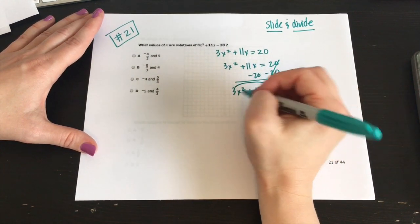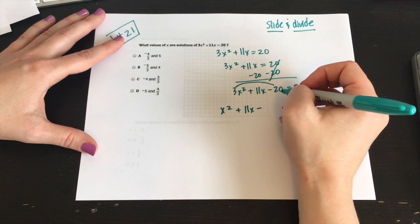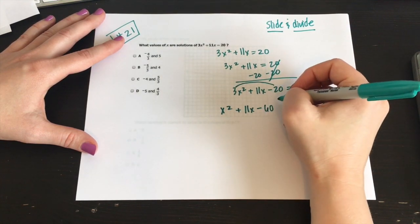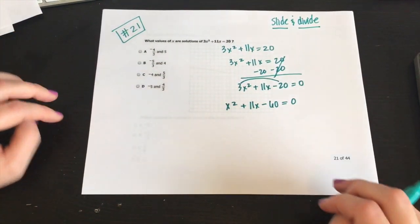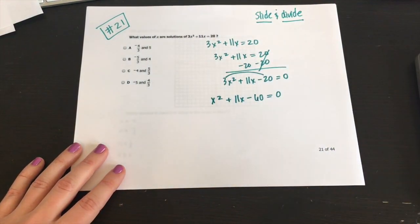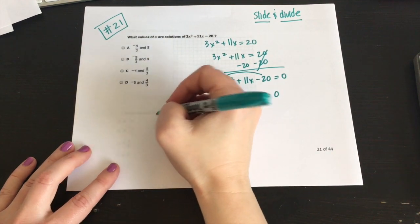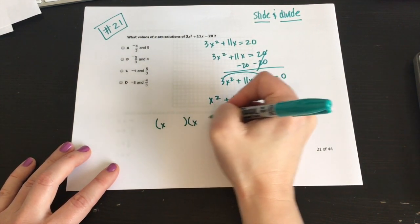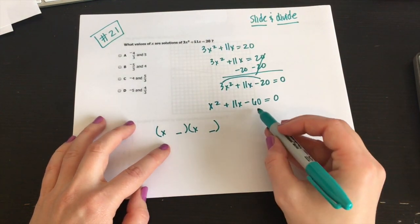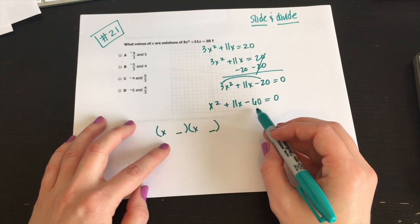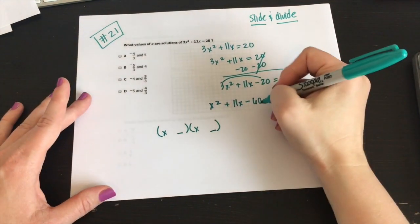So 3x squared plus 11x minus 20 is equal to zero. So now that looks like something that you have seen before. I am again going to use the slide and divide. Just remember if you slide it, you must divide it. So 3 times 20, that's 60. And then zero. Now we're here. So I just did 3 times a negative 20 should give me a negative 60. Now remember what we're doing here. We're essentially going to have two parentheses at the end of the day that look like this. And the two of them, the outside numbers here are what we're looking for.